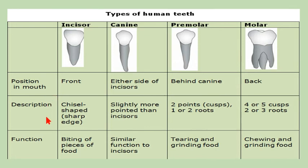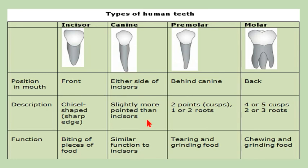Now let's look at the position, shape, and function of the four types of teeth. Teeth are of four types: incisor, canine, premolar, and molar. Incisors are present at the front — four in each jaw — they are chisel-shaped and used for biting and cutting. Canines are present on either side of incisors — two in the upper jaw and two in the lower jaw — they are pointed and used for cutting and tearing.